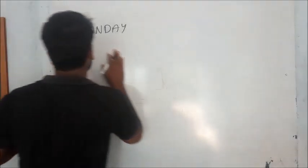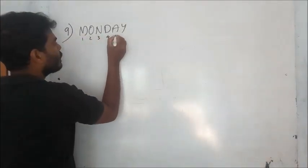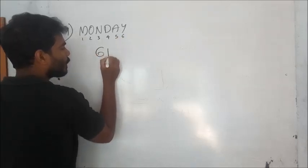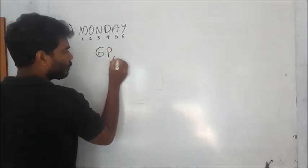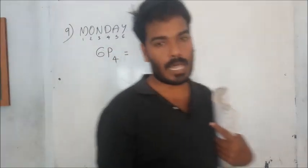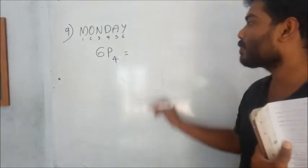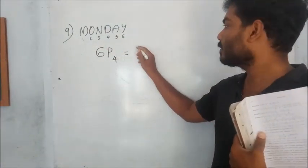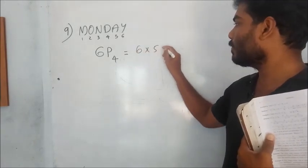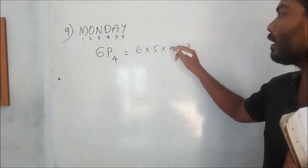So we have 1, 2, 3, 4, 5 — that gives us 6P4. Now 6P4 equals 6 into 5 into 4 into 3.